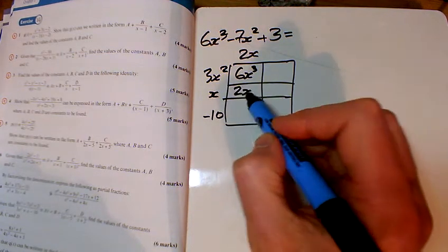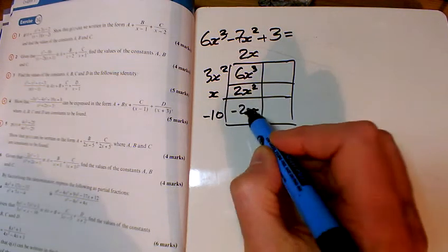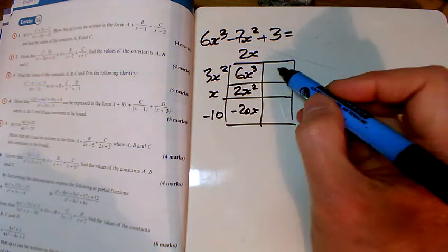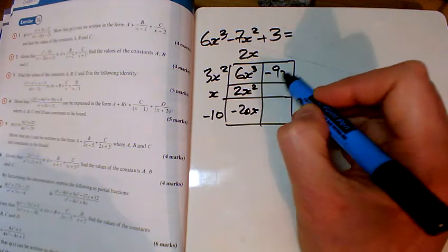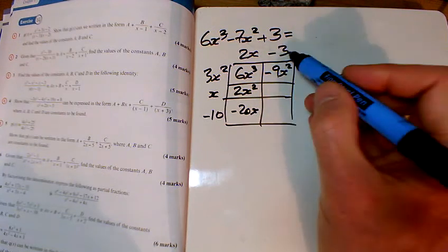That gives me 2x². It also gives me -20x. I want -7x², so I need to subtract another 9x². To get that, I need to put -3 here.